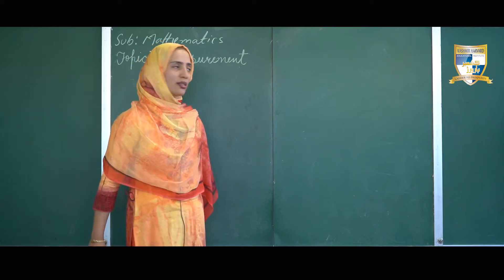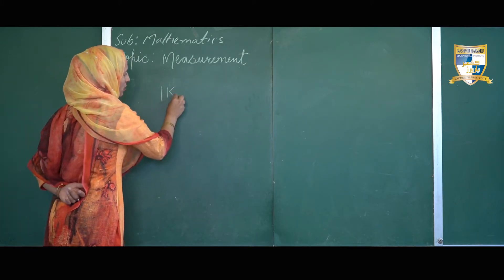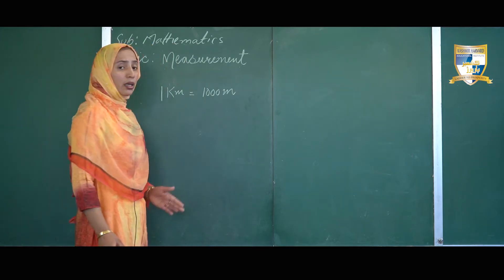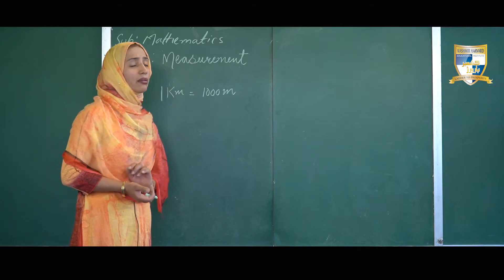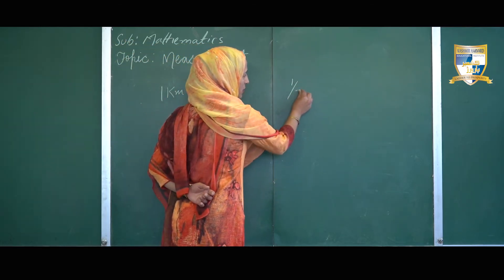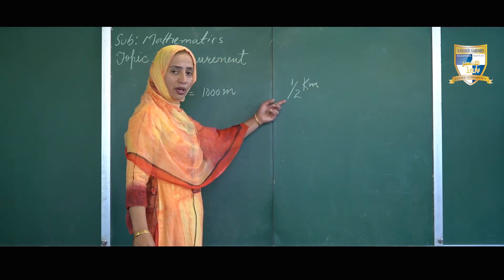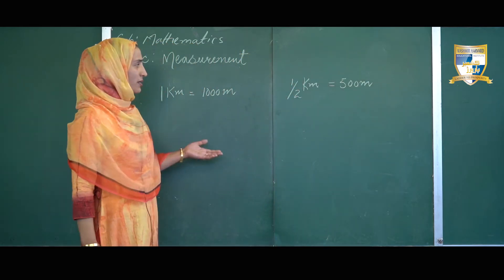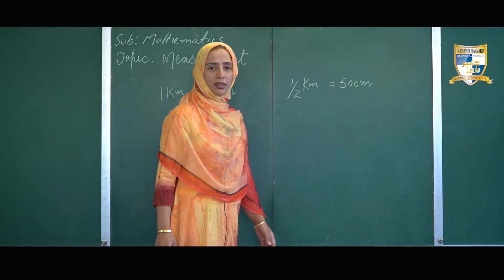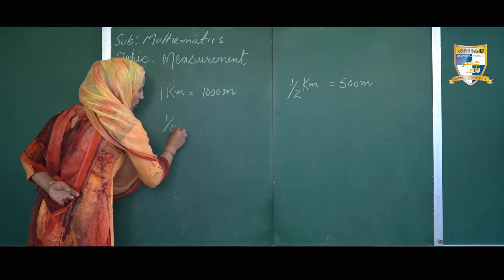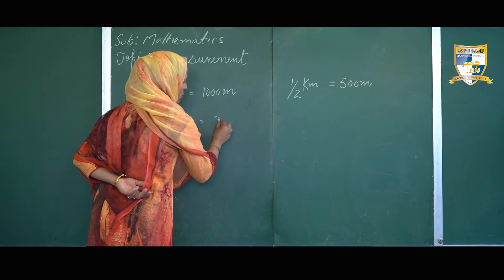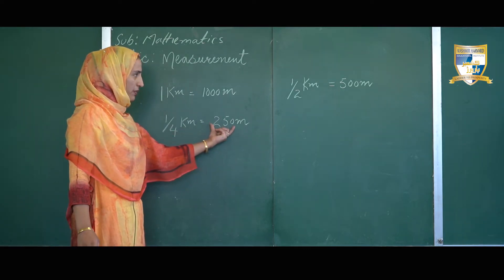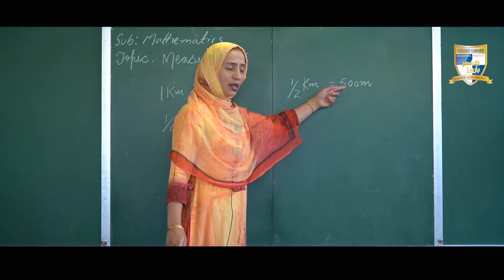Let us understand the relation between these units. One kilometer equals one thousand meters. If we divide one kilometer into one thousand equal parts, one part is called a meter. Similarly, one half kilometer is equal to 500 meters — if a kilometer is divided into two parts, one part is equal to 500 meters. One fourth of a kilometer equals 250 meters; if we divide a kilometer into four parts, one part is equal to 250 meters.